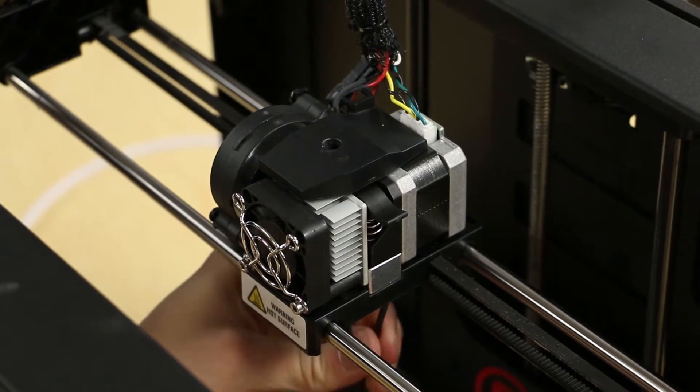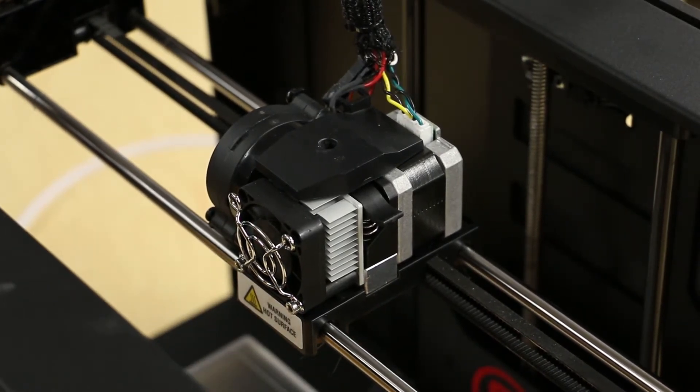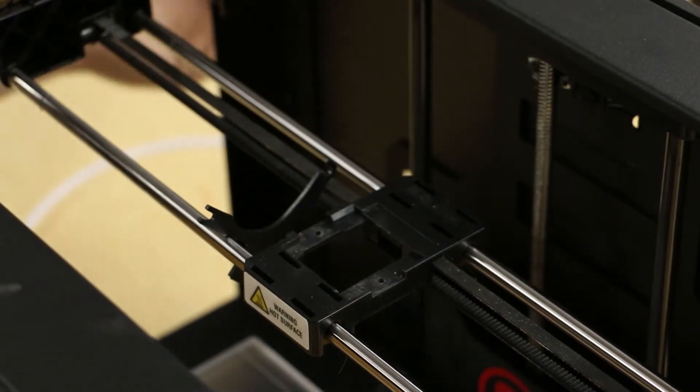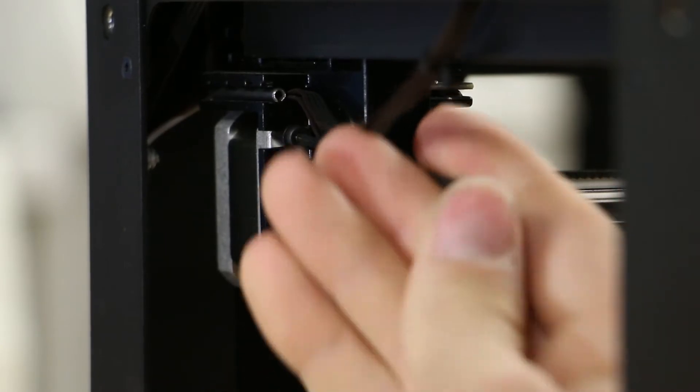Loosen and remove the two set screws holding the extruder to the carriage. Now lift the extruder assembly up and out and set it aside. We will now move to the right side of the machine.